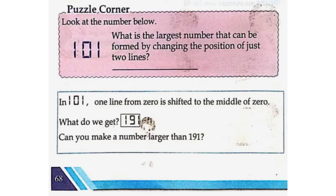Puzzle corner. Look at the number below: 101. What is the largest number that can be formed by changing the position of just two lines? In 101, one line from the zero is shifted to the middle of the zero. What do we get? 191. Can you make a number larger than 191? Yes: 11,111.